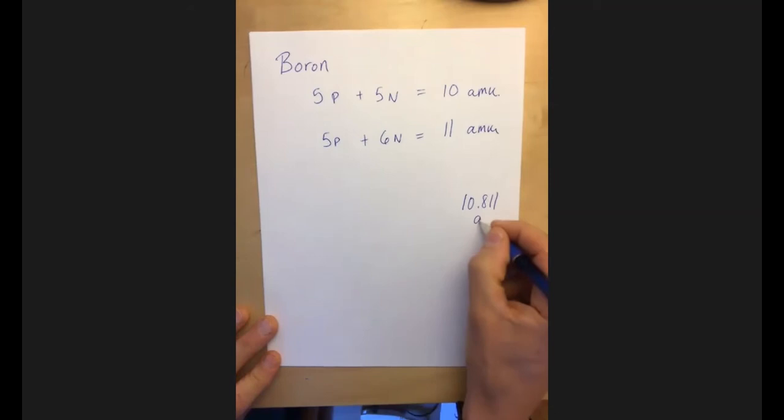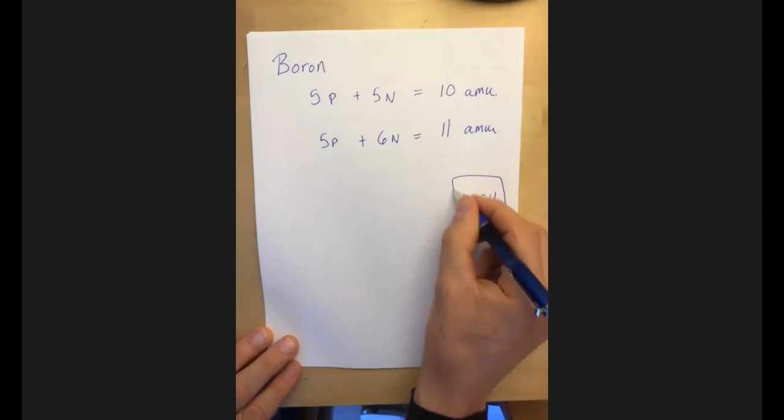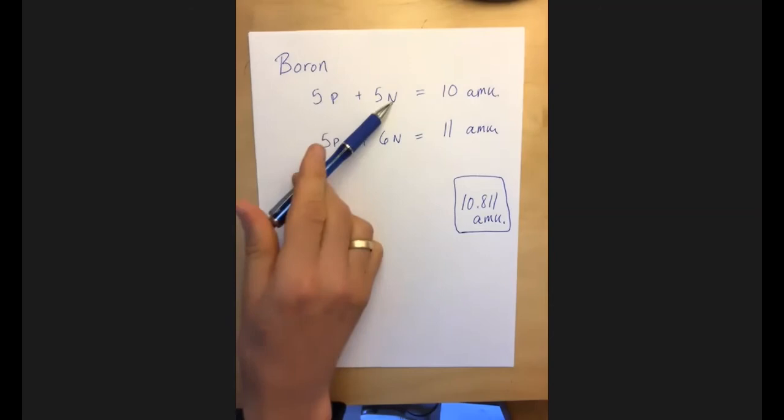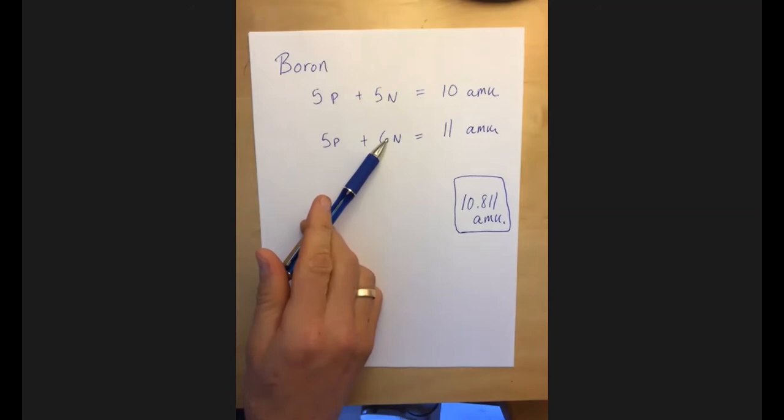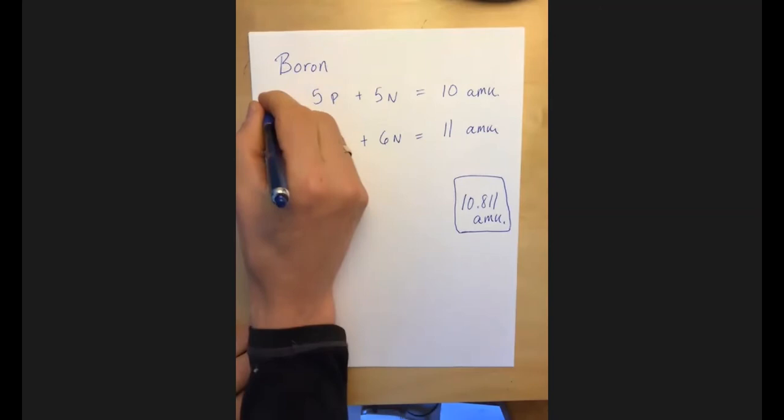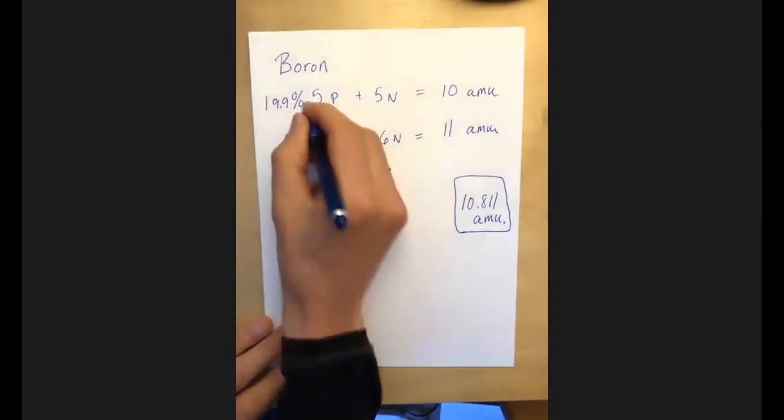Okay, that's our target number that's on the periodic table. So we have some borons that have five neutrons and some borons that have six neutrons. It just so happens that in nature, this 10 AMU boron makes up about 19.9% of all boron.